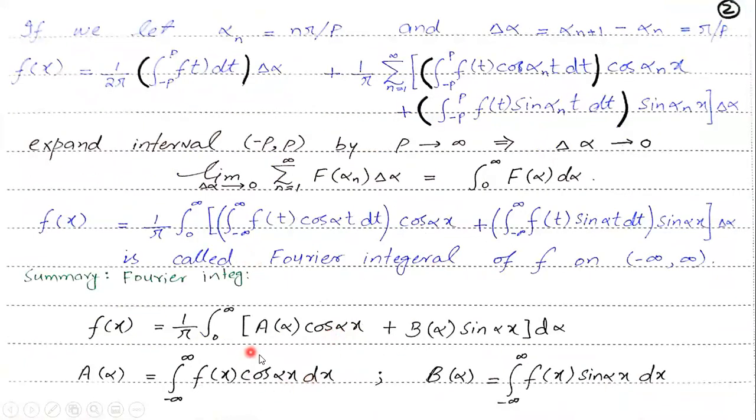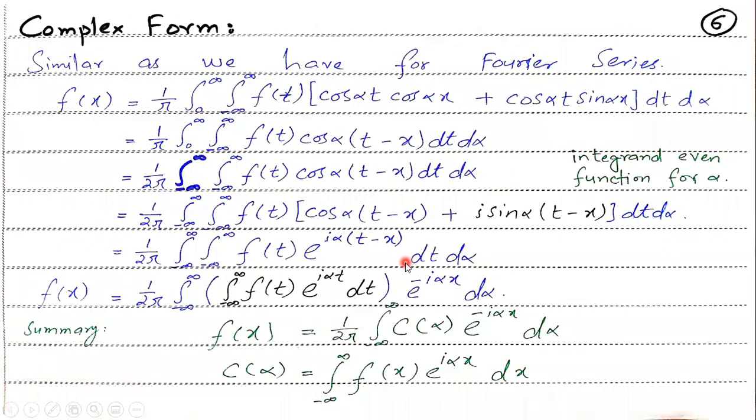This is the integration. So you will put a alpha value here and b alpha value here. In these two you can see that the f of x and dx. F of x and dx integration minus infinity to infinity. So I have taken the common. That is just this. dt minus infinity to infinity.